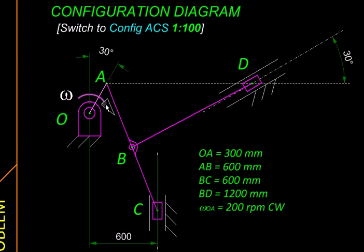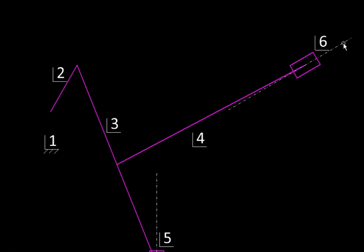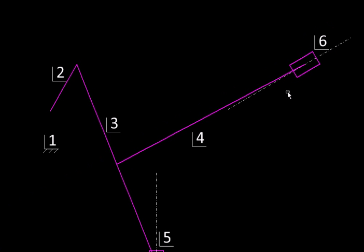Additionally we know the angular velocity of crank OA. We begin by numbering links 1, 2, 3, 4, 5, and 6 and then we start locating the instantaneous centers that we readily know.